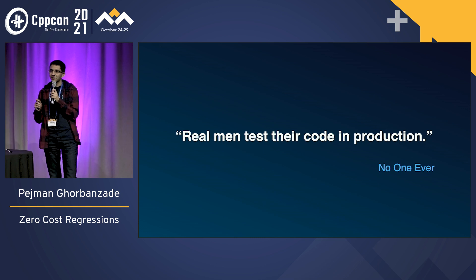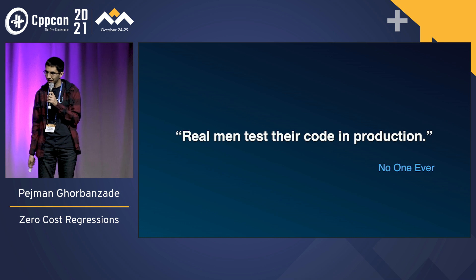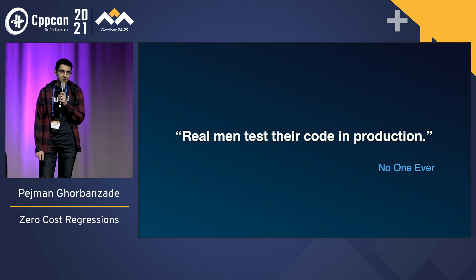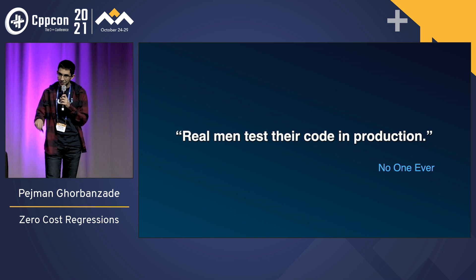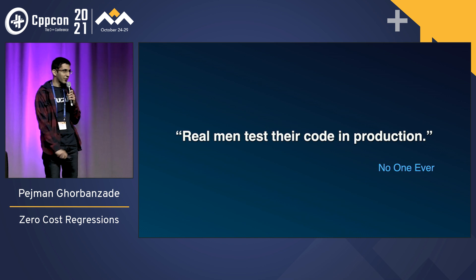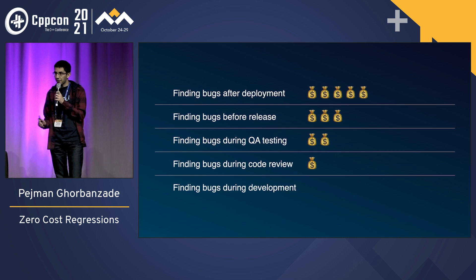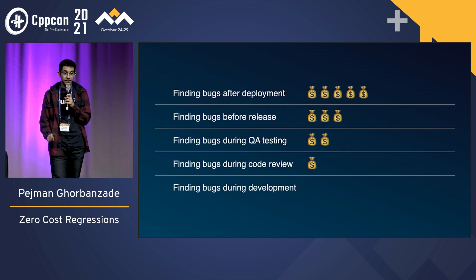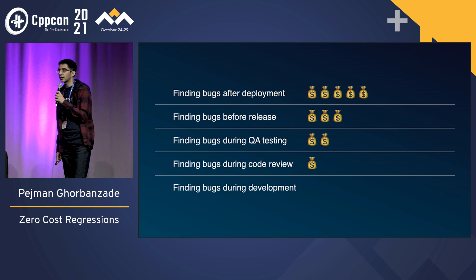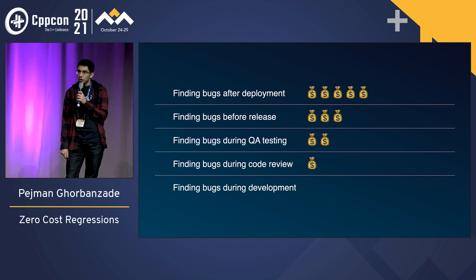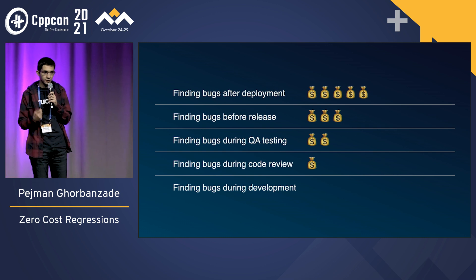This problem happens so often because we don't test our code — well, not really. We try our best, but at the same time it's difficult because there are always these unintended side effects of the code changes that we are making. So it boils down to how fast we can find these unintended side effects.